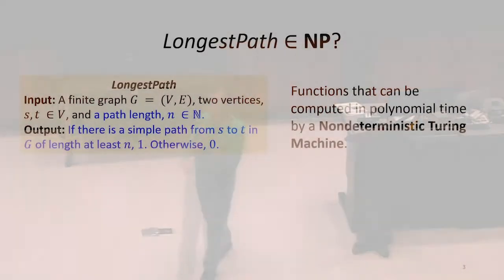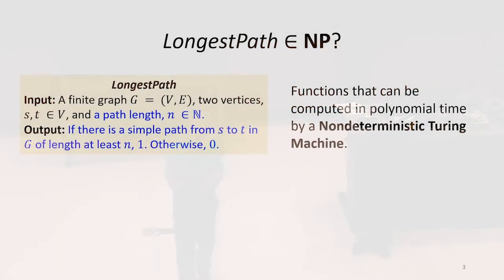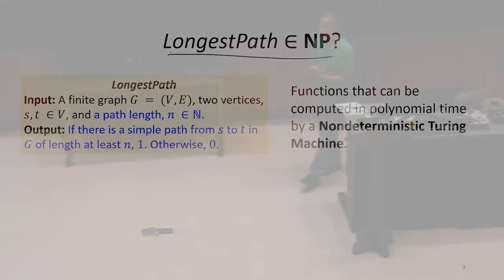So the other thing to recap and make sure that everyone understands, we have this longest path function, which we've now stated as a decision problem. How do we know that longest path is within class NP? How would you convince someone that this longest path function can be computed in class NP?